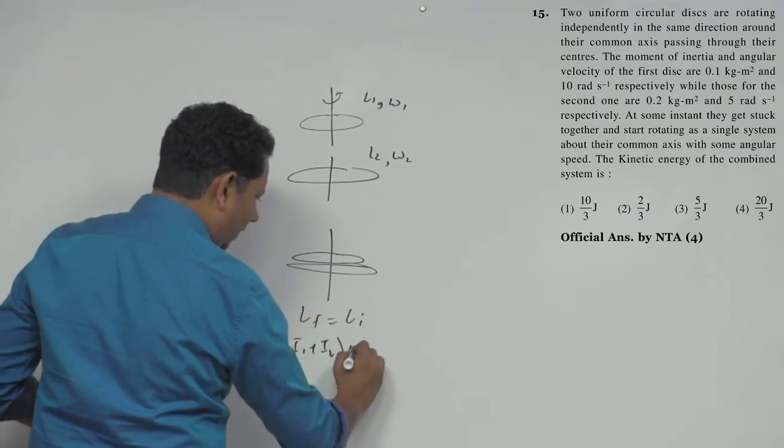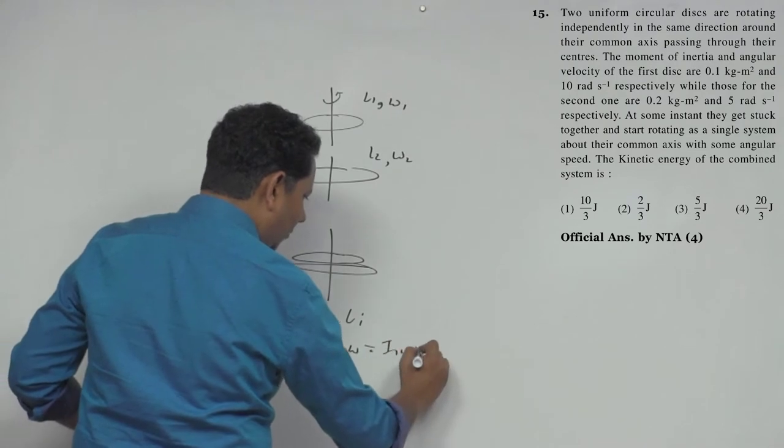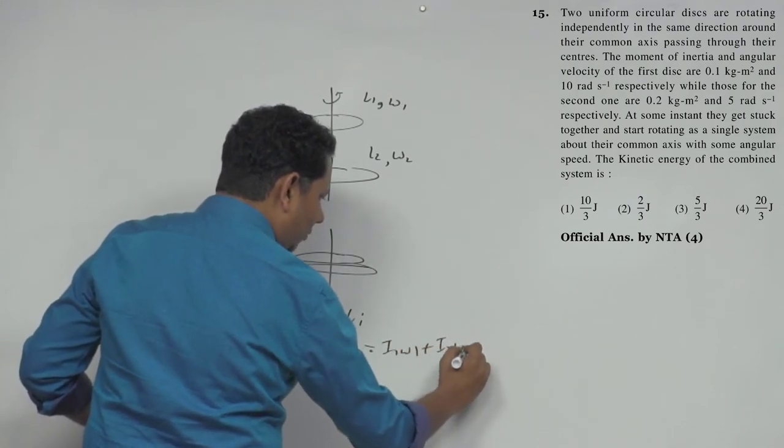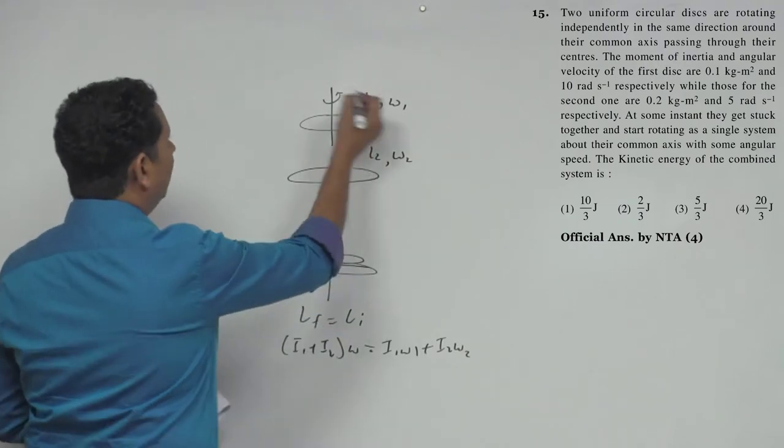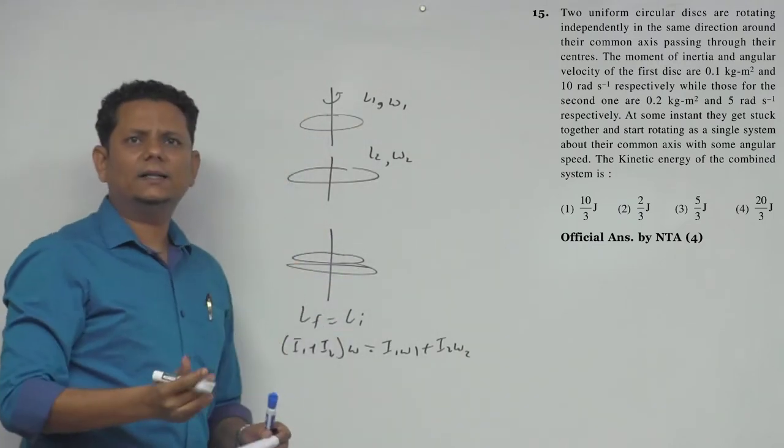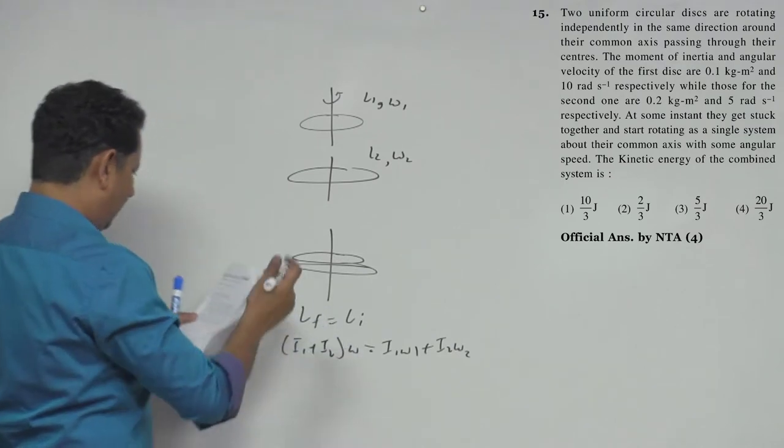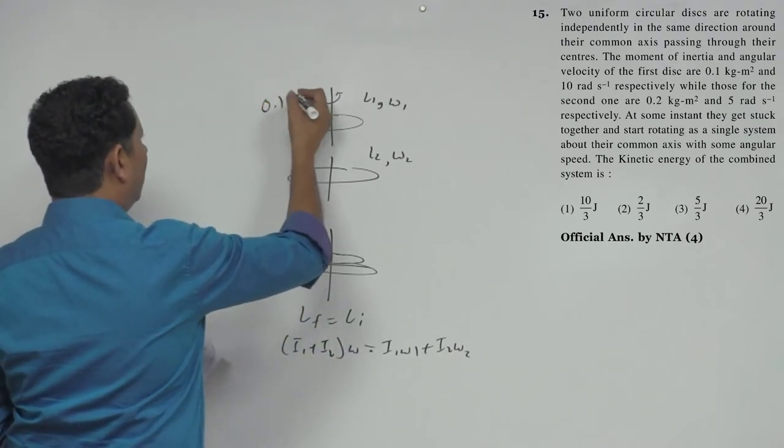I1 plus I2 times final omega will be equal to I1 omega 1 plus I2 omega 2. So I1 plus I2, we have the disc values 0.1 and 10.